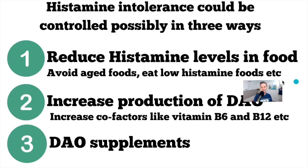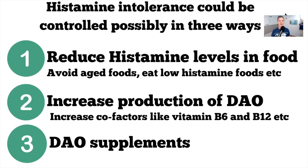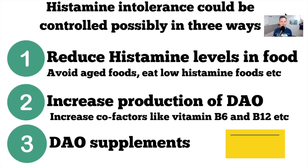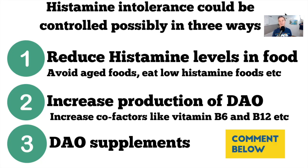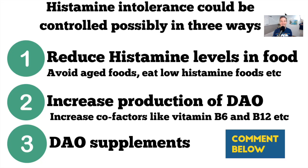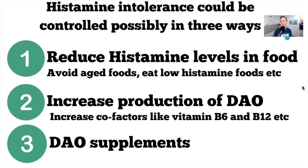To summarize, there are three possible ways to control histamine intolerance. One: reduce histamine levels in food — avoid aged foods, eat low-histamine foods, and be mindful of how long you leave food out or in the fridge rather than freezing it. Two: increase the production of DAO by ensuring you have plenty of cofactors like B12, B6, copper, and vitamin C. Three: consider DAO supplementation. Hopefully that has been helpful.